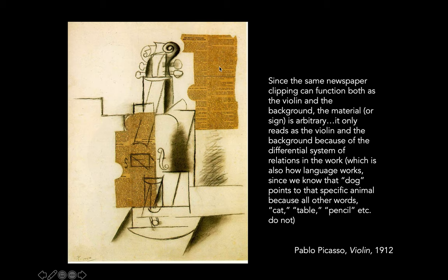You need to have another word that's not Groot to be able to start producing meaning of some kind. So here you have, in some ways, the same thing — these are cut from the same newspaper. But because of this slight difference, this negation and relationship between the violin and the background, they read as two different signs.